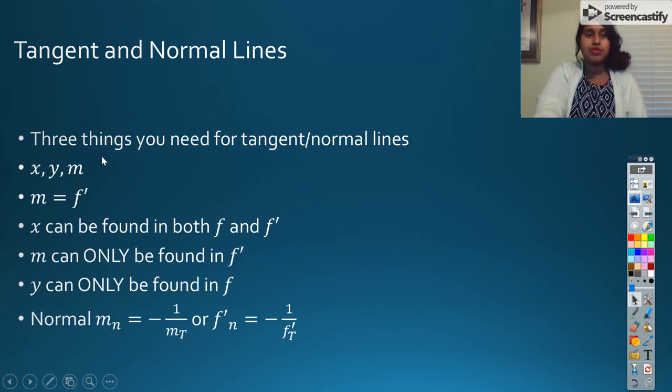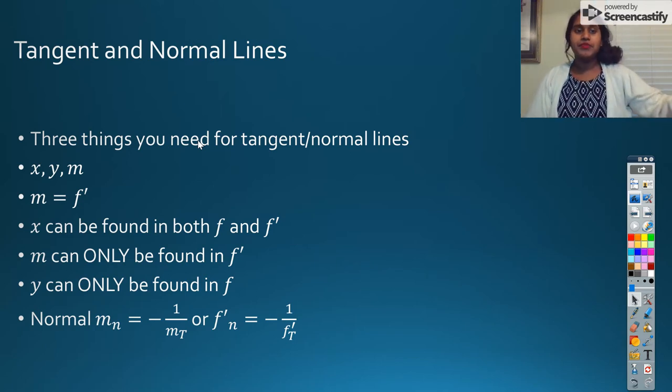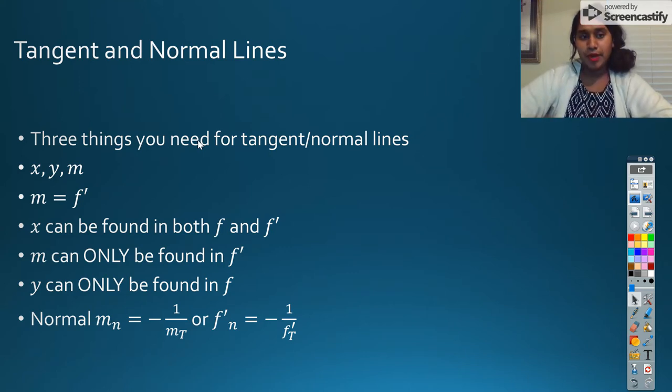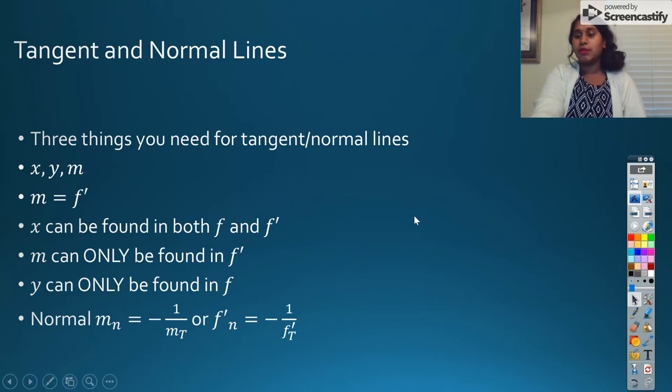Some things that you need to know about tangent and normal lines - you really only need three things. In every tangent normal line equation, you're looking for an x, a y, and a slope. But really, we know that slope is going to be our derivative. My derivative is my slope. So my m has to actually be f prime or y prime. Your x's, because they are independent, can be used in either your function or in your derivative. However, to clarify, x can be found in either formula, but y can only be found using the function. Slope can only be found using the derivative.